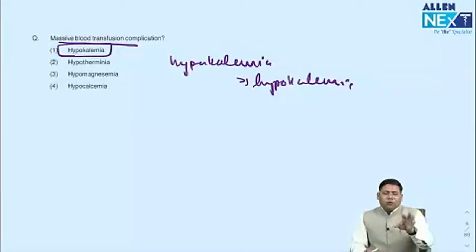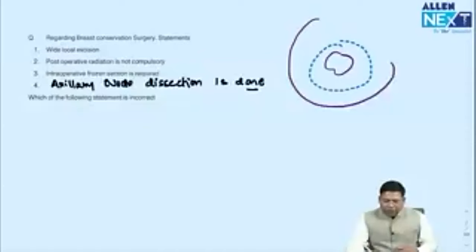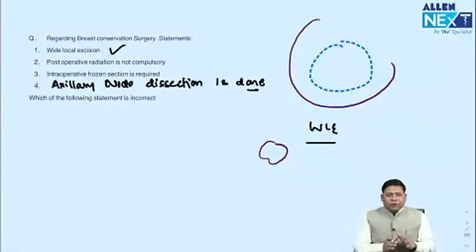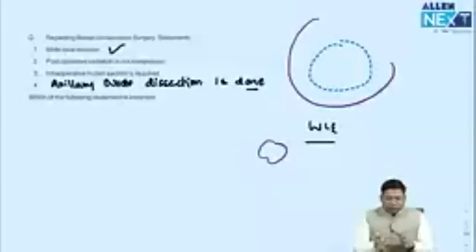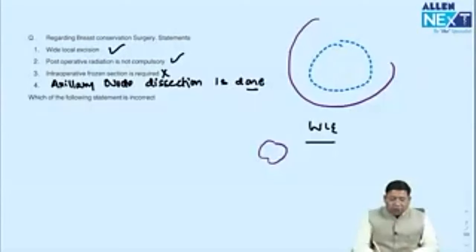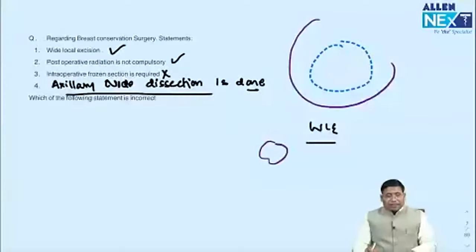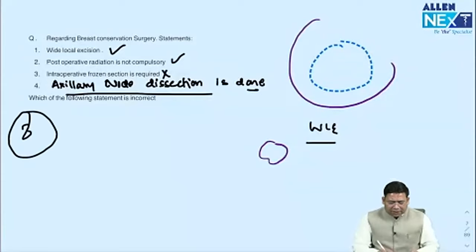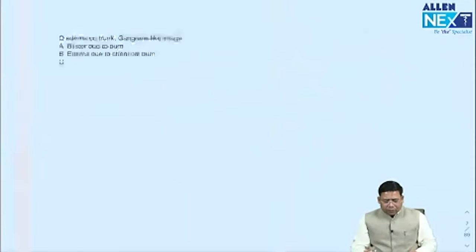Breast conservation surgery question: lumpectomy means simply removing the lump — also called wide local excision. Wide local excision is not compulsory for in-situ tumors. Intraoperative frozen section is not always required. Axillary lymph node dissection may be done if sentinel lymph node biopsy is positive. Among the options, the statement 'intraoperative frozen section is required' is the most non-feasible option.